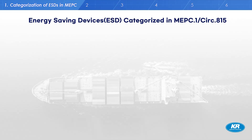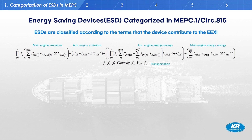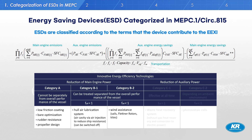First, you need to know how Energy Saving Devices, so-called ESDs, are categorized. According to MEPC1 Circular 815, ESDs are classified as Category A, B, and C according to the terms that the device contributes to the EEXI formula.